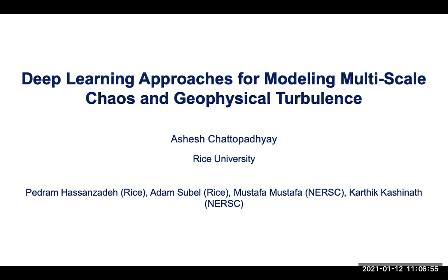So broadly, I'll be talking about deep learning approaches for modeling multiscale chaotic systems. Our climate system is a multiscale chaotic system — geophysical turbulence. Usually, if it's a multiscale chaotic system and there is no spatial-temporal scale separation in the system, then we can call it turbulence. I'll be talking about standard turbulence models or climate dynamics models, and developing theory for multiscale chaos, which is one component to almost all turbulence models.